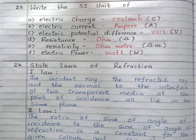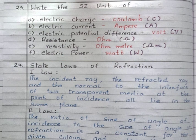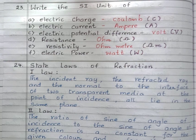Next question: Write the SI units. Electric charge — Coulomb. Electric current — Ampere. Electric potential difference — Volt. Resistance — Ohm. Resistivity — Ohm meter. Electric power — Watt.